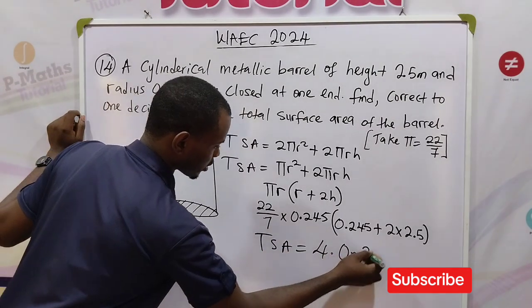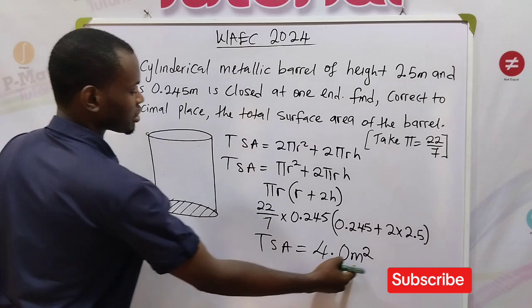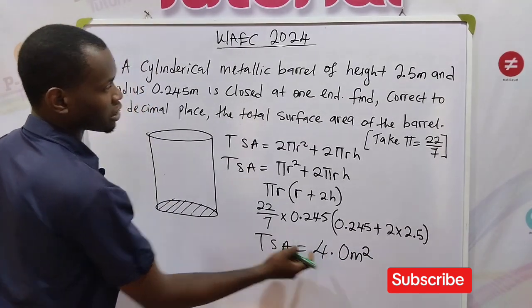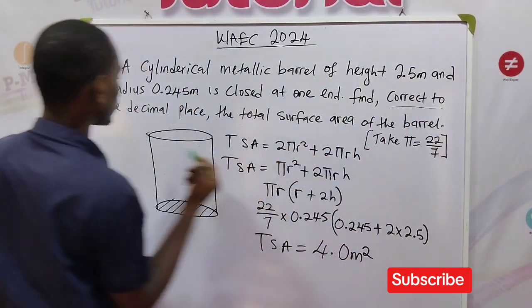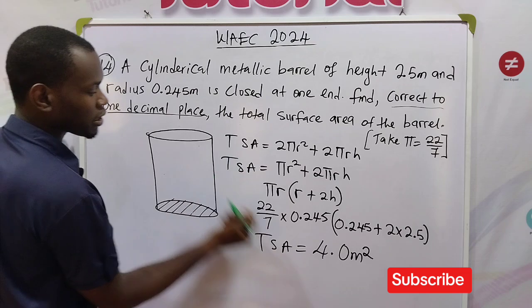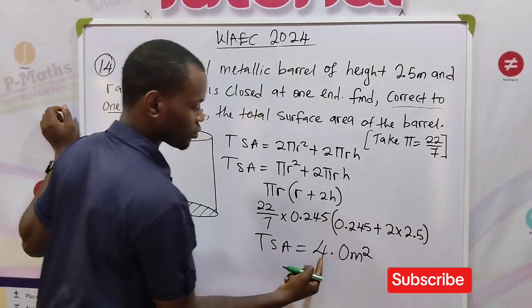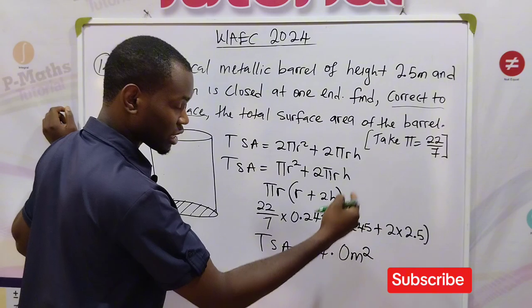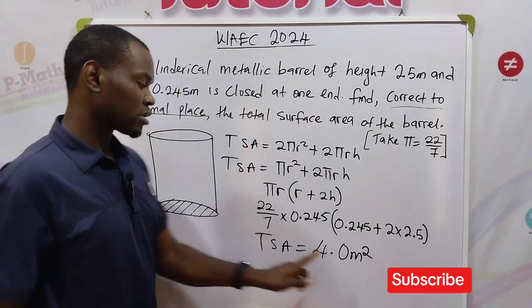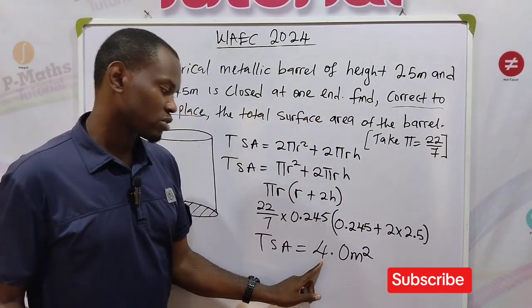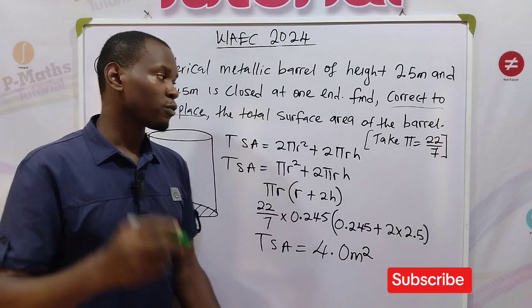At the end of the day, we are obtaining TSA 4.0 meters squared. Area is measured in meters squared. Take note that we are asked to correct to one decimal place, that is why I have 4.0. When you use your calculator, what you will have is 4.038. Taking it down to one decimal place, you have 4.0.